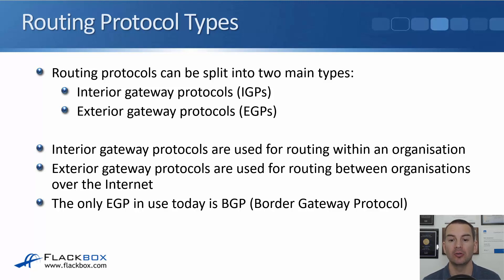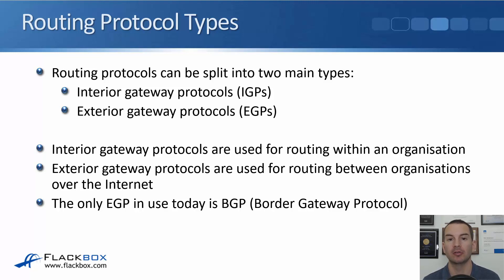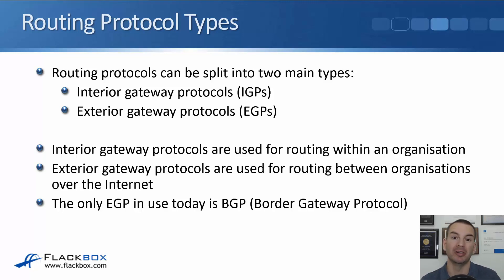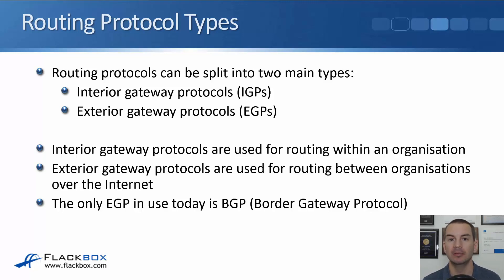Interior gateway protocols are used for routing within an organization. An exterior gateway protocol is used for routing between organizations over the internet. There used to be legacy EGPs, but the only EGP in use today is BGP, the Border Gateway Protocol.